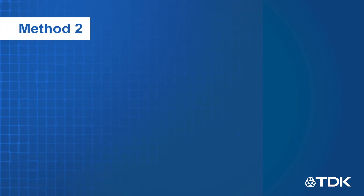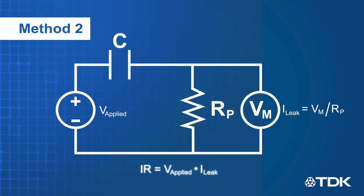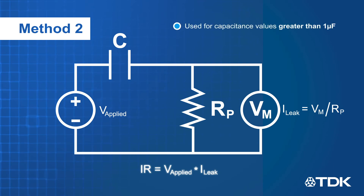The second method is to apply a voltmeter in parallel with a resistor and then connect these in series to the capacitor and voltage source. The leakage current can be calculated based on the voltage across the resistor. This method is used for capacitors with higher capacitance values, which typically have higher leakage currents that the ammeter will not be able to measure accurately due to the noise and instability of the charged capacitor.